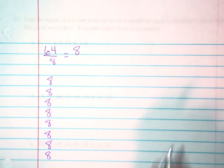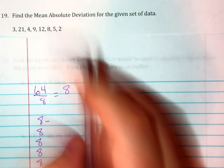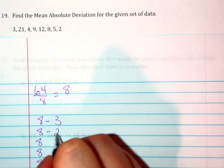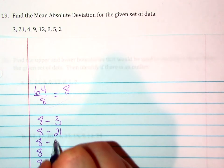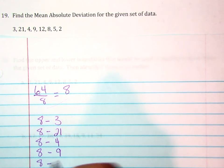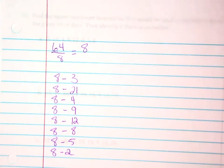And after I've written it down the eight times, then I'm going to subtract each one of my data points: minus 3, minus 21, minus 4, minus 9, minus 12, minus 8, minus 5, minus 2.